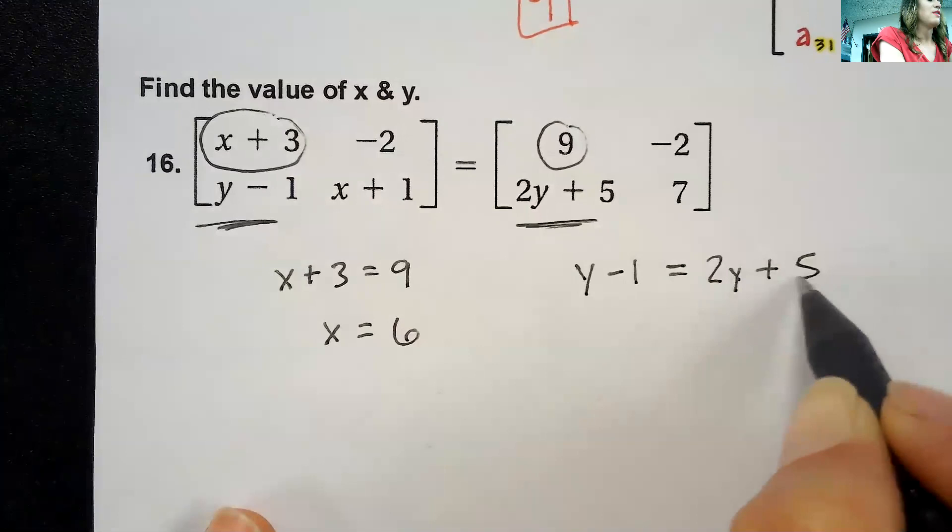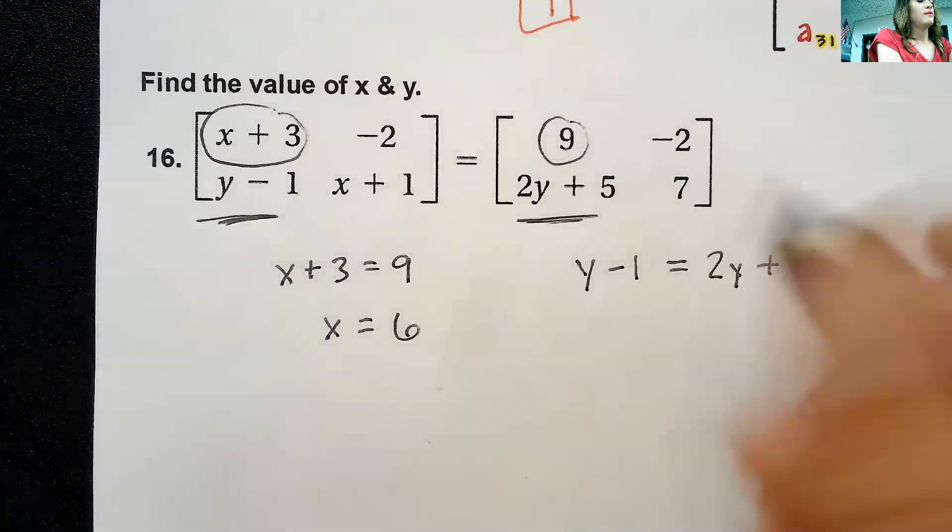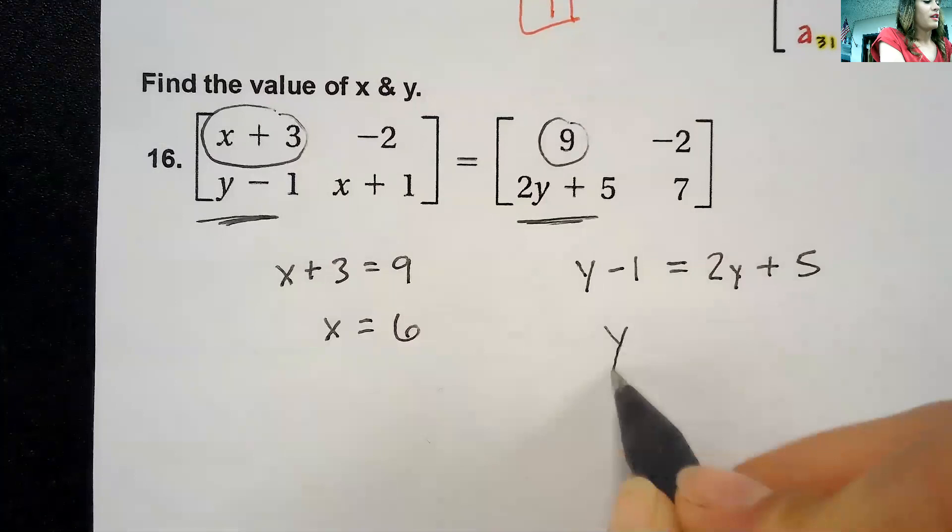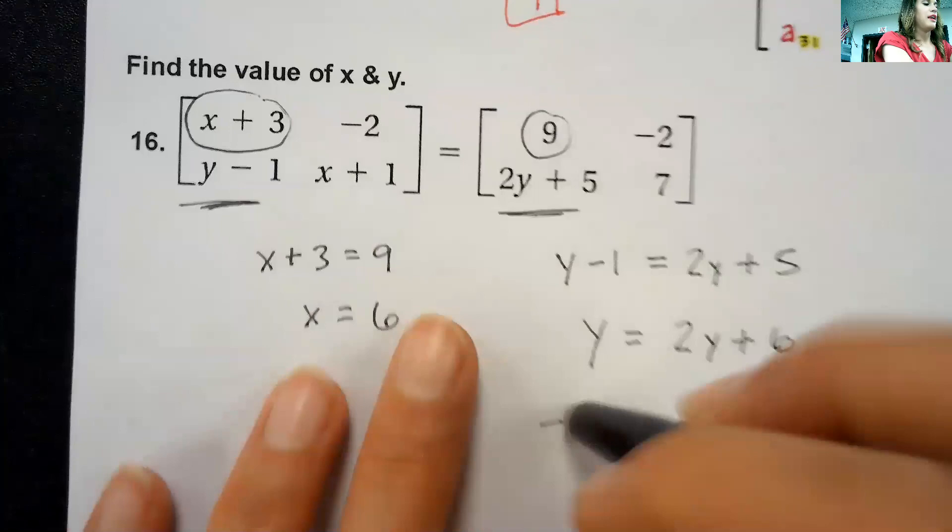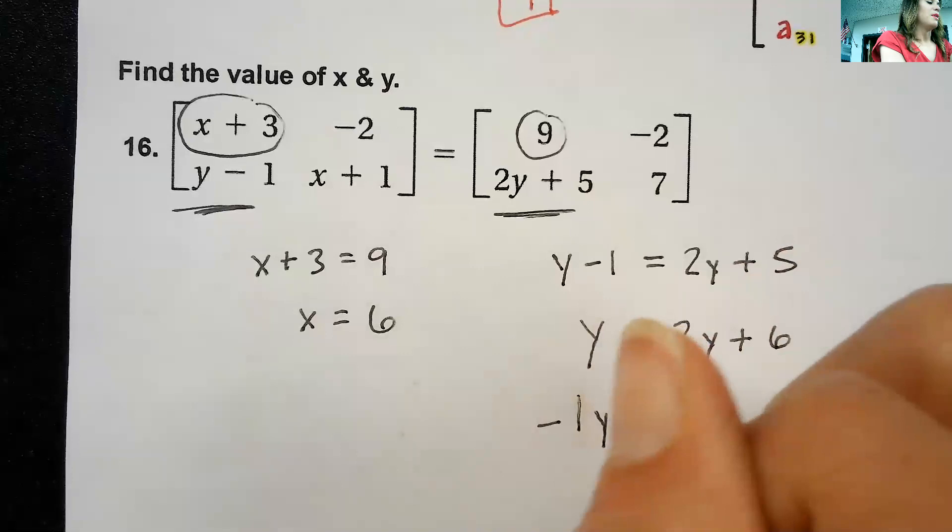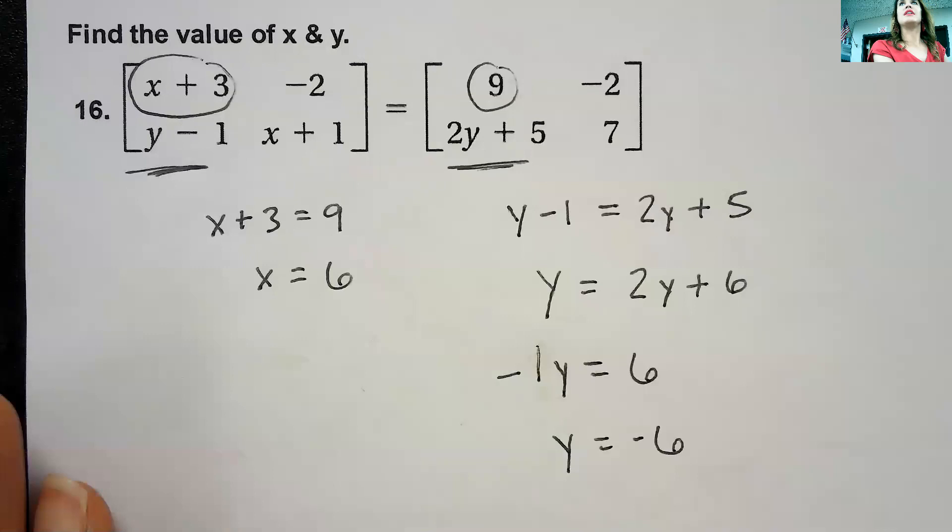And then the y's, we'd have y - 1 = 2y + 5, and we can solve that equation. No big deal, just don't empty the side out. So let's say I add the 1 over, that give me y = 2y + 6. Subtract the 2y so I get -1y. y = 6, and then divide by -1. So if you already worked ahead on number 16, you end up getting that x is 6 and y is -6.